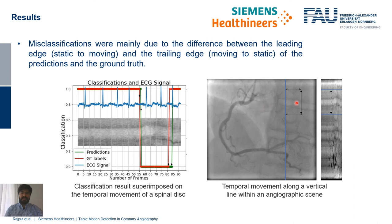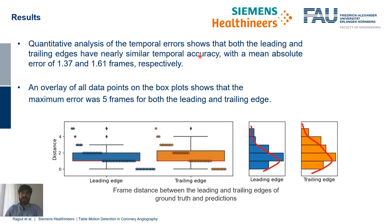The figure on the right shows the temporal movement in an angiographic scene along a vertical line. We selected as an example the temporal movement of one vertebra and overlaid this on the classification result. This superimposition shows that the 3D CNN + ConvLSTM Fusion Network can successfully distinguish between moving and static frames. The misclassifications that mainly occurred were due to differences at the leading edge and trailing edge between ground truth and prediction.